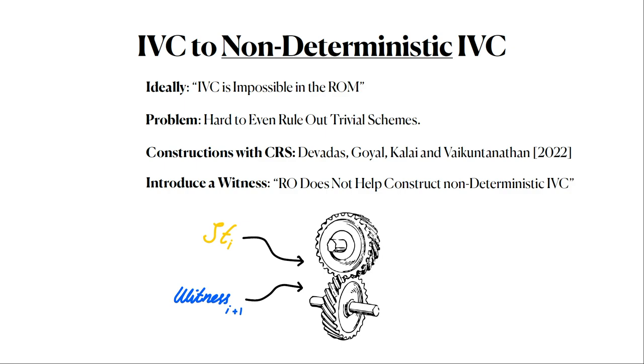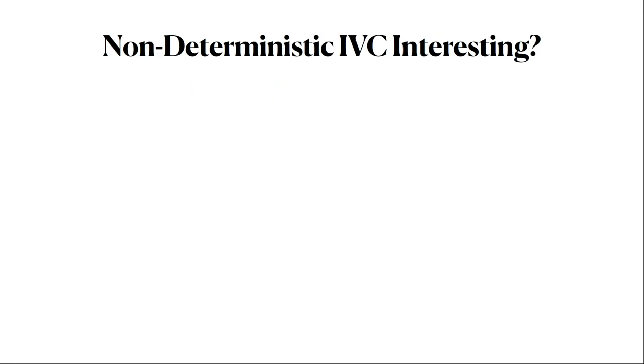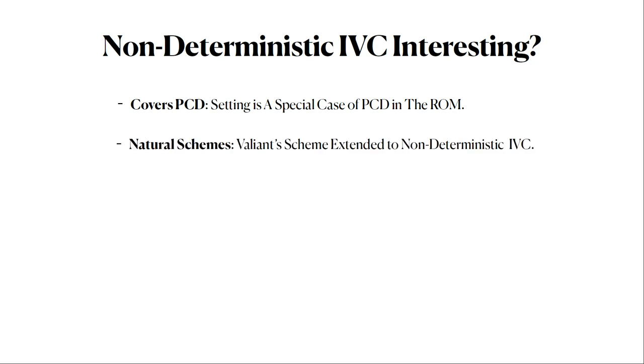What we can do instead is we can introduce a witness. This is the same version of IVC that was described in the AROM talk. Now computation is non-deterministic, so it takes a state and some witness. The function takes a state and a witness and it produces some new state. Is non-deterministic IVC still interesting? Or have I just made up a thing and then proved an impossibility about it?